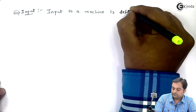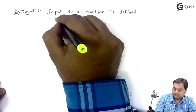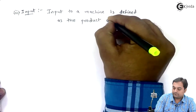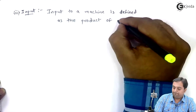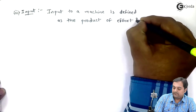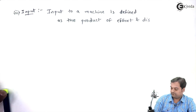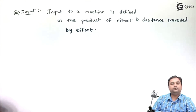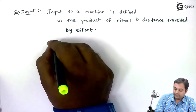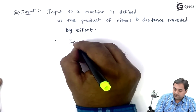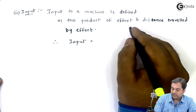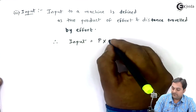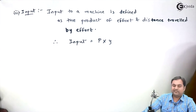The next definition is input. Input to a machine is defined as the product of effort and distance traveled by effort. Therefore, input is equal to P into Y — that is effort multiplied by distance traveled by effort.